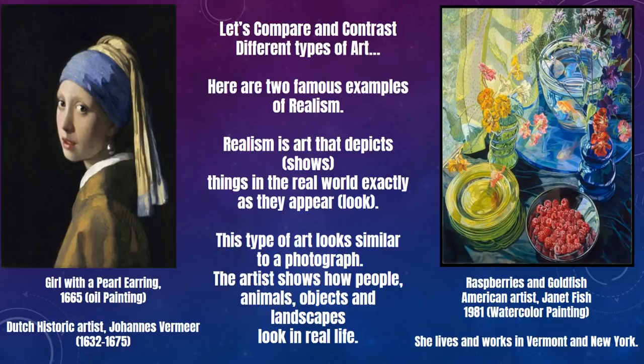On the left you see an oil painting created in 1665 by Dutch historic artist Johan Vermeer, who lived from 1632 to 1675, and he titled this work of art Girl with a Pearl Earring. On the right you see Raspberries and Goldfish painted by American artist Janet Fish, who lives and works in Vermont and New York. This is a watercolor painting that she created in 1981.